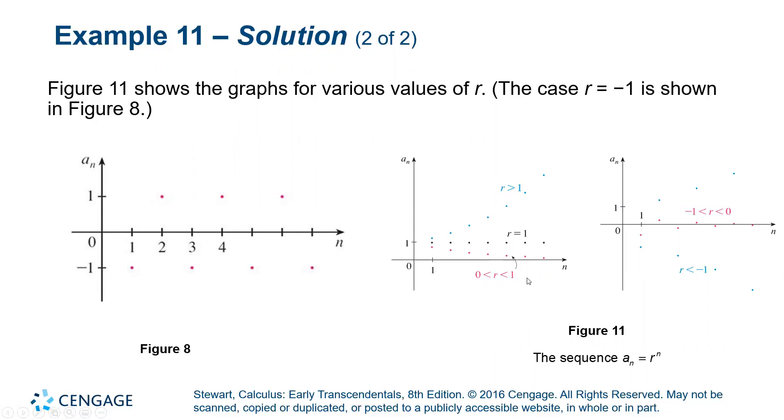In this next one, we have a few different graphs where R is greater than one. Of course, it grows and grows and grows. You've seen exponential functions before. If R equals one, it stays exactly the same right at the value one. And if R is between zero and one, it gets closer and closer and closer to zero as N approaches infinity.